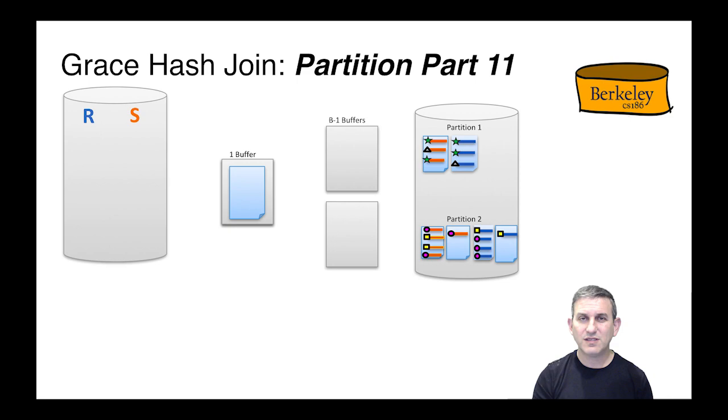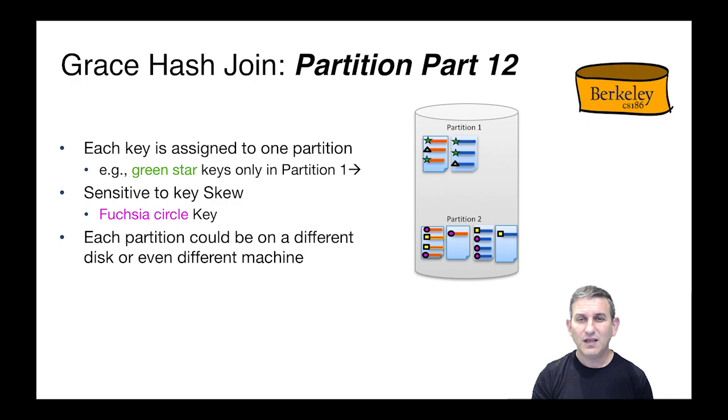You can see we have divided our problem into separate partitions that we can now join up using essentially naive hash join in the second phase. Note that each key in the first phase in partitioning is assigned to exactly one partition. All the green stars are in partition one.